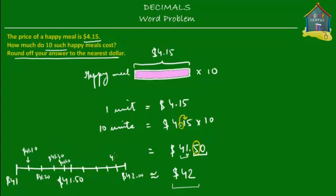Now, our answer happens to be at the midpoint. The midway between $41 and $42 is here. Now, we know that everything to the left of the midpoint will be rounded down because they're closer to $41 than they are to $42.